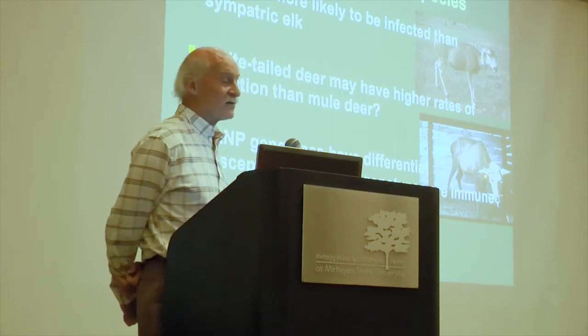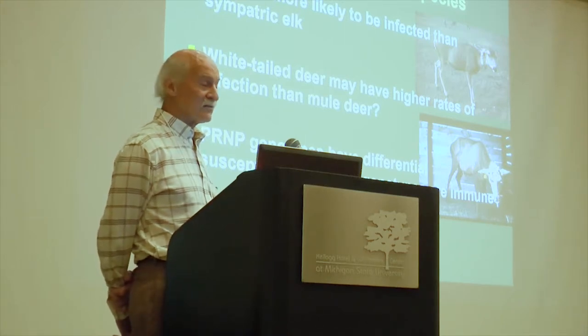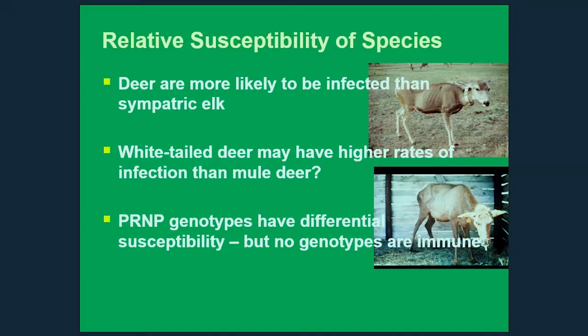There are also differences in relative susceptibility among the species. Deer seem more likely to be infected than elk and get higher prevalences. It's unclear how white-tailed deer and mule deer compare — they seem pretty similar — but white-tailed deer may be slightly more susceptible. For all three species, the PRNP genotype makes a big difference in how long it takes to become infected, the ability to become infected, and how long the disease lasts once infected.